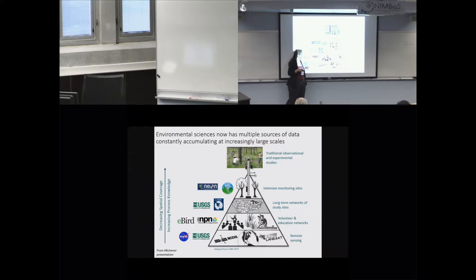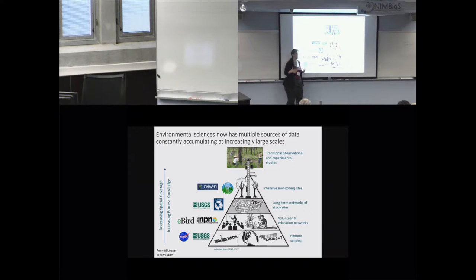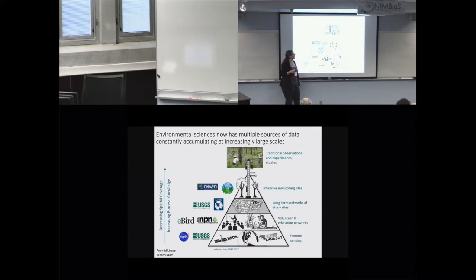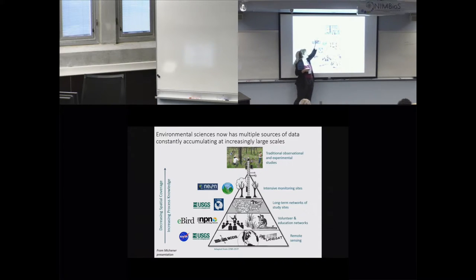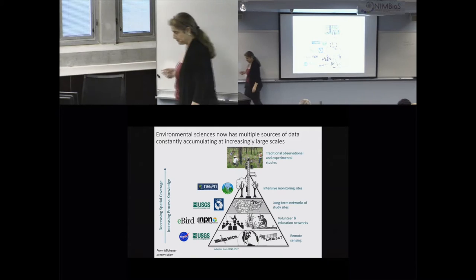Volunteer and education networks — now widely known as citizen science — provide huge human observation networks. We have long-term networks of study sites with rigorously collected protocols and intensive monitoring sites. On top of that, traditional observational and experimental studies provide mechanistic data. The intersection between small-scale mechanistic data sets and large-scale data sets is the really exciting part of data-intensive environmental science — you use the mechanistic information to make large-scale predictions that you can then test.